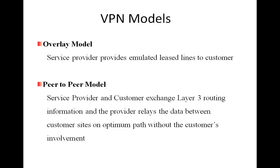In the overlay model, the service provider is basically saying: here, take a leased line — it could be an ATM circuit, a Frame Relay circuit, or whatever. He's providing layer 2 services and mapping that onto his MPLS network. All the routing problems are the concern of the VPN customer, and a lot of customers prefer that.